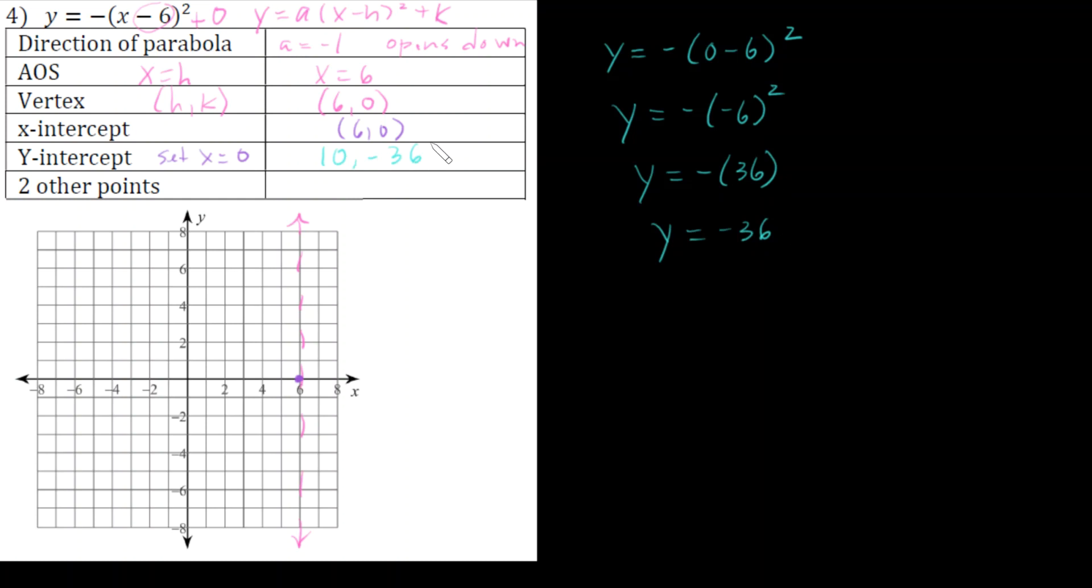None of these points really helped us graph this parabola. So what do we have to do? We have to make a table. We have to make a table of x's and y's. We really need one point.